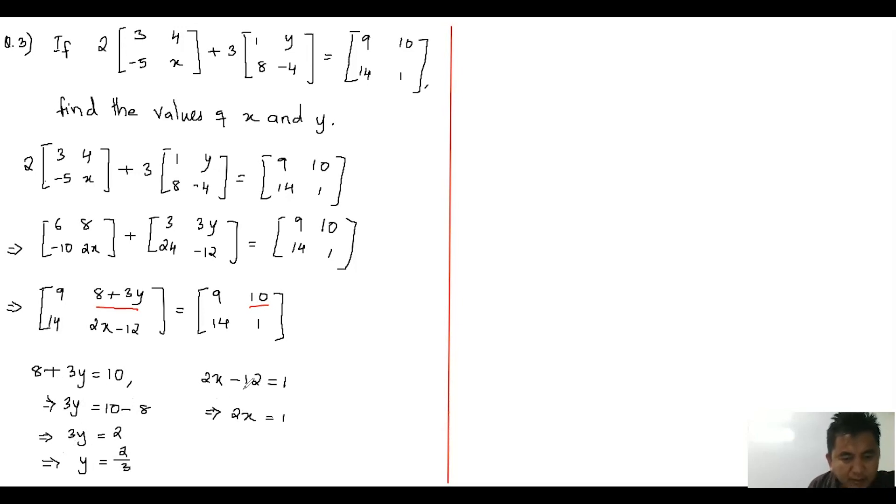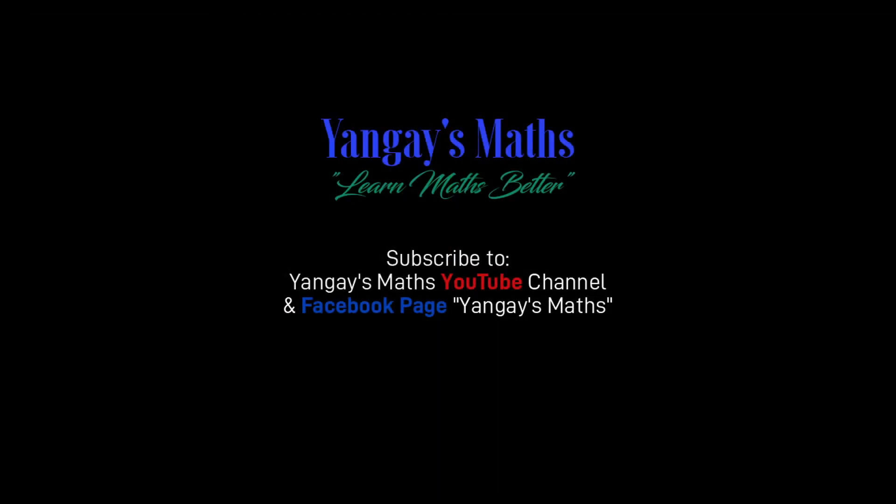Similarly from here, 2x equals one plus twelve, which implies 2x equals thirteen. Finally, x value equals thirteen by two.